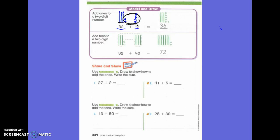Let's count it together. Ten, twenty, thirty, thirty-one, thirty-two, thirty-three, thirty-four, thirty-five, thirty-six. So thirty-two plus four equals what, first grade? Thirty-six. You guys are exactly right. It is thirty-six.